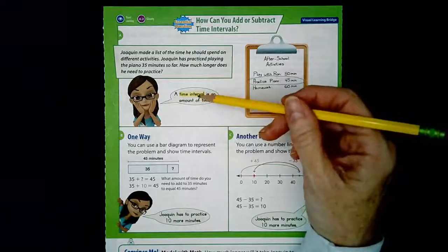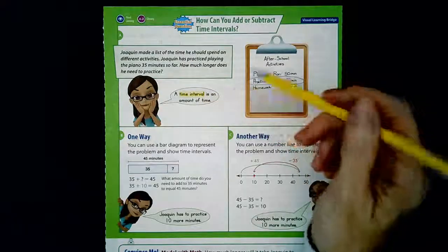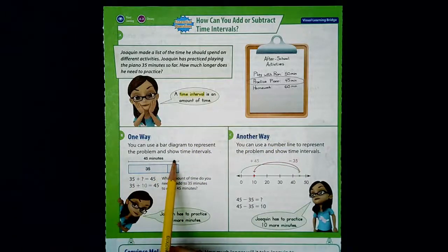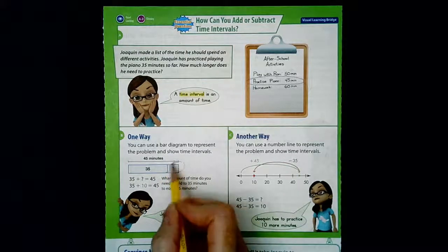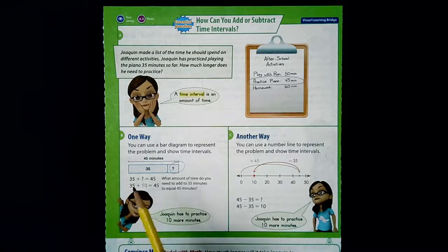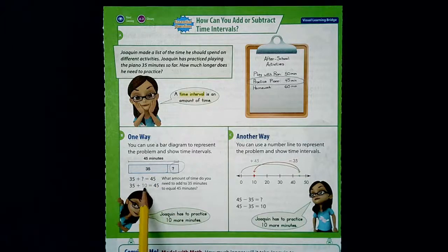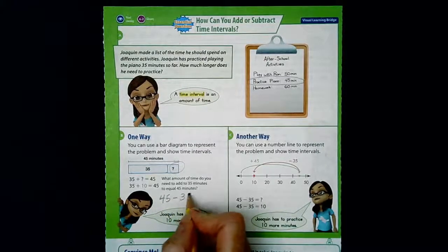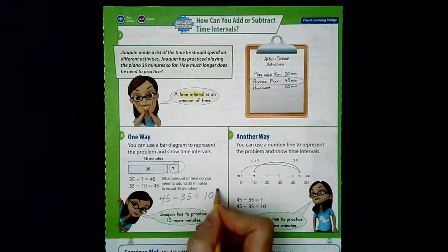A time interval is an amount of time. One way to solve it is with a bar diagram: the total needs to be 45 minutes, 35 minutes are already done, and we find the unknown part. So 35 plus question mark equals 45 — the answer is 10. Another way: 45 minus 35 equals 10.